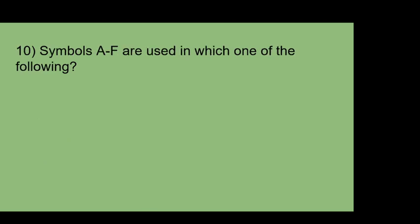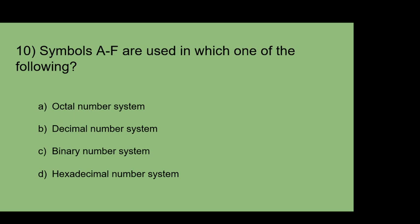Symbols A to F are used in which of the following? A: Octal number 16. B: Decimal number 16. C: Binary number 16. D: Hexadecimal number 16. In hexadecimal number system the base is 16 and there are 16 different digits from 0 to F. So the answer is hexadecimal number 16.